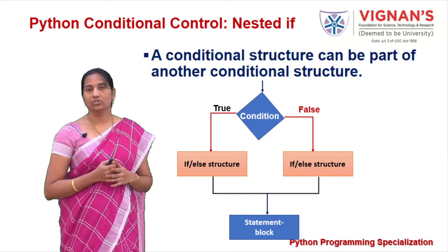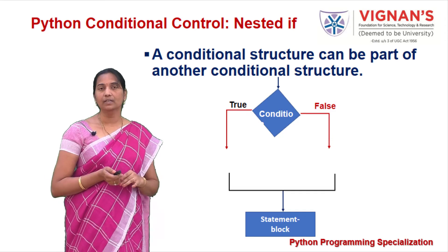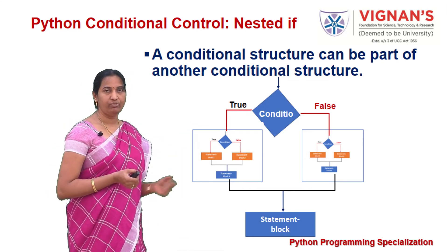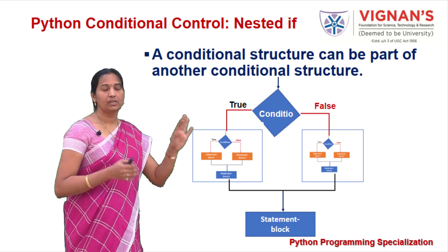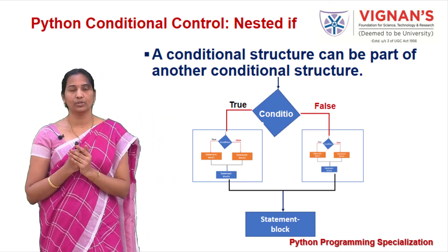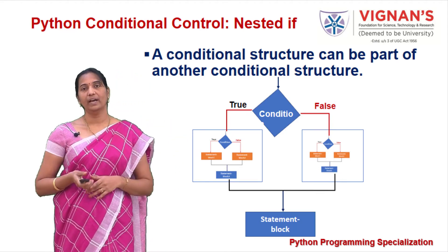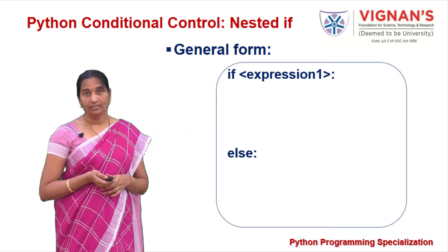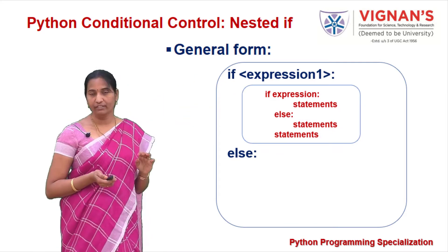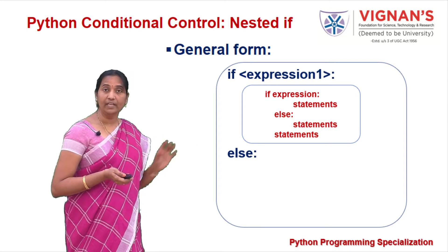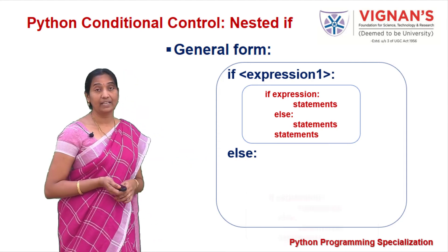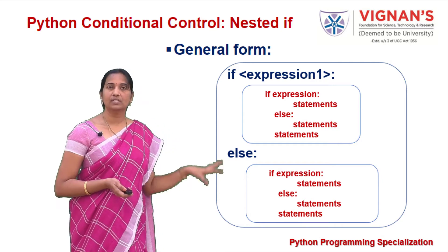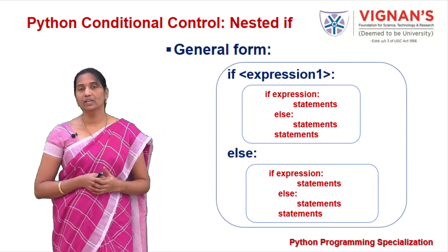In the general form of a nested if structure, when expression 1 is true, a complete if-else structure is placed inside the if block. When expression 1 is false, control falls to the else block, which also contains another complete if-else structure. You can have nested conditionals in the true block, the false block, or both — it's up to you.